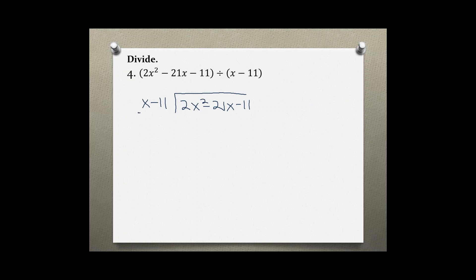Now by what do we have to multiply x to get 2x squared? We multiply by 2x because 2x times x gives us 2x squared and 2x times negative 11 gives us negative 22x.